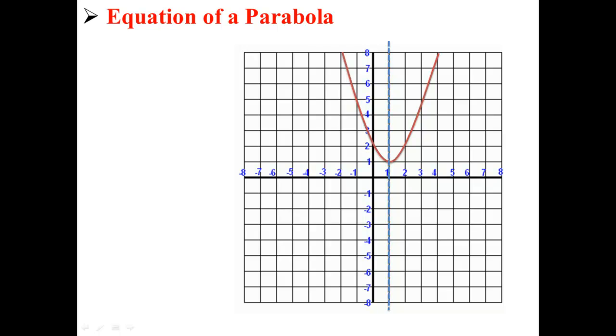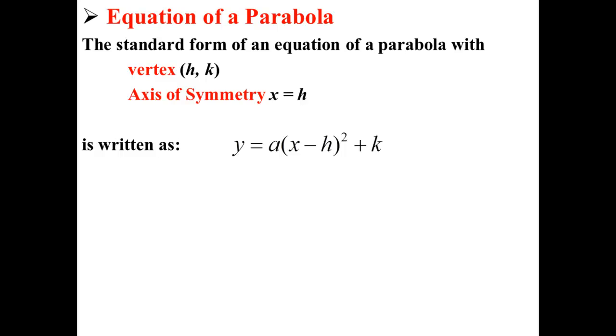Here we have a graph of a parabola. This parabola has a vertex at the point (1, 1) and an axis of symmetry at x = 1. The standard form of an equation of a parabola with vertex (h, k) and axis of symmetry x = h is written as y = a(x - h)² + k.